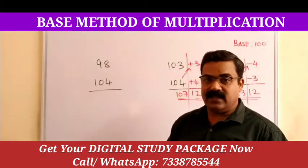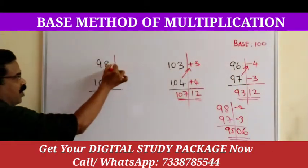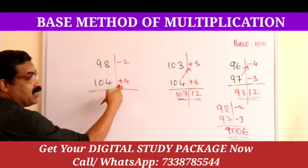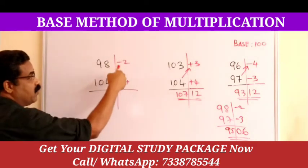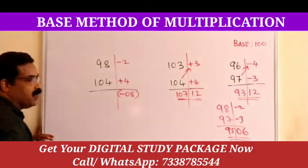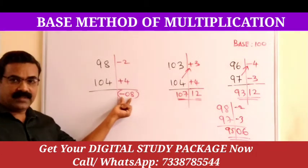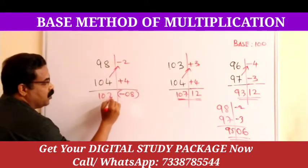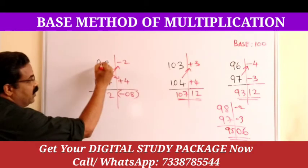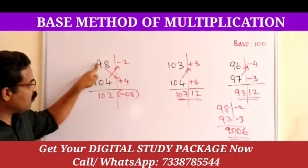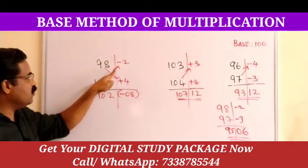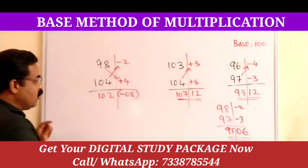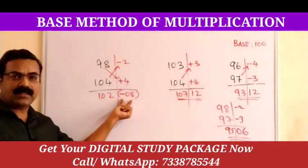For example, 98 times 104: the deviation of 98 is minus 2, and the deviation of 104 is plus 4. Multiplying: minus 2 times plus 4 equals minus 8. For the left-hand side, cross subtraction gives 104 minus 2 equals 102, or equivalently cross addition 98 plus 4 also equals 102. But we cannot finalize the answer yet because we have a minus 8 on the right-hand side.